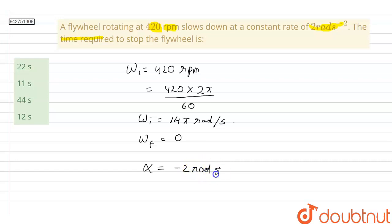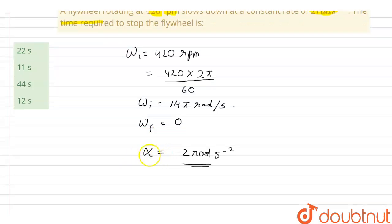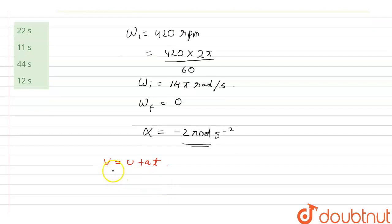Now we have initial angular velocity, final angular velocity and acceleration, and here we can see that acceleration is constant so we can use the first equation of motion, that is v equals u plus at.